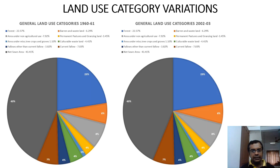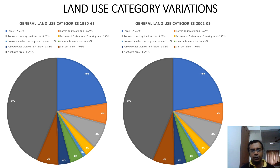In this slide you can compare the land use category variations from 1960-61 to 2002-2003. It is self-explanatory, so I am moving on to the next portion of this chapter.